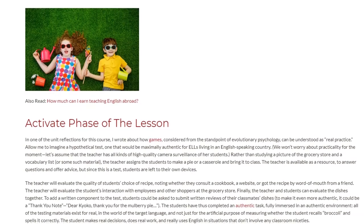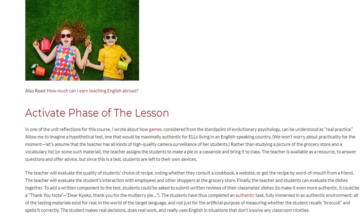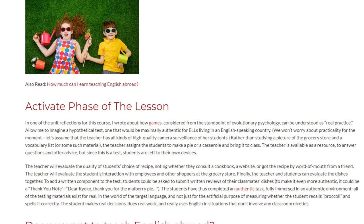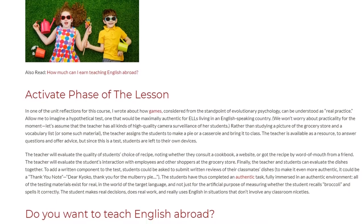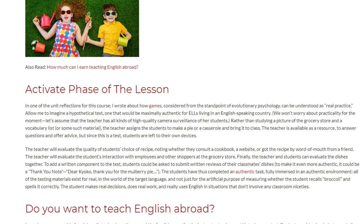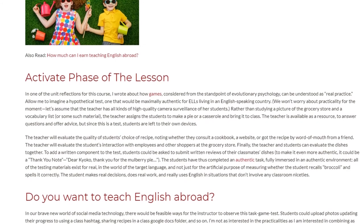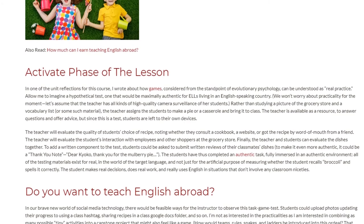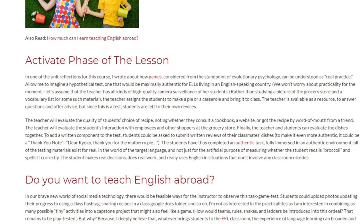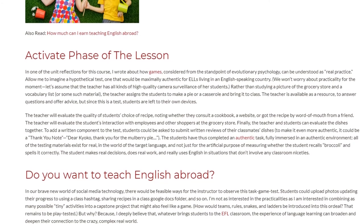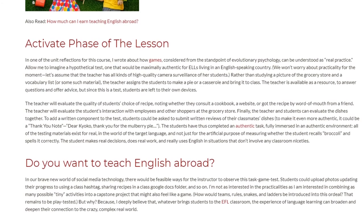The teacher will evaluate the quality of students' choice of recipe, noting whether they consult a cookbook, a website, or got the recipe by word of mouth from a friend. The teacher will also evaluate the students' interaction with employees and other shoppers at the grocery store. Finally, the teacher and students can evaluate the dishes together. To add a written component, students could submit written reviews of their classmates' dishes — or, to make it even more authentic, it could be a thank you note: 'Dear Kyoko, thank you for the mulberry pie.' The students have thus completed an authentic task, fully immersed in an authentic environment. All testing materials exist for real, in the world of the target language, and not just for the artificial purpose of measuring whether the student recalls 'broccoli' and spells it correctly. The student makes real decisions, does real work, and really uses English in situations that don't involve any classroom niceties.